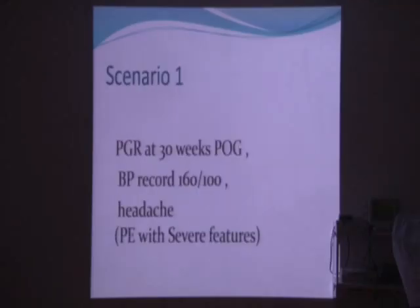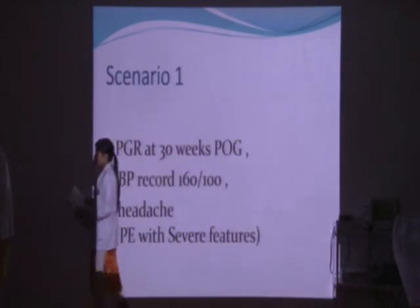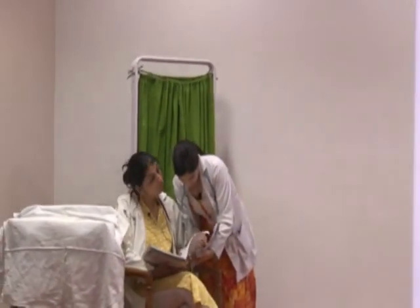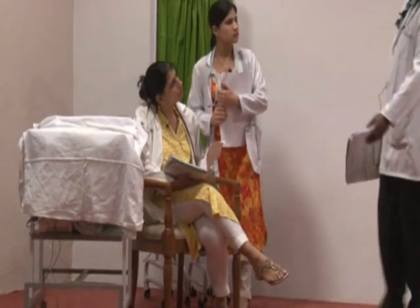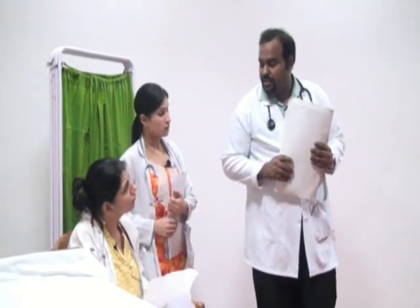Coming to scenario 1: the patient who has come to us at 30 weeks period of gestation. She is a primigravida patient and comes to us with a BP record of 160/100 with headache. Ma'am, there is Mrs. M who has been referred with pregnancy-induced hypertension. Her BP today is 160 by 100 and she also gives history of headache since 3 hours.